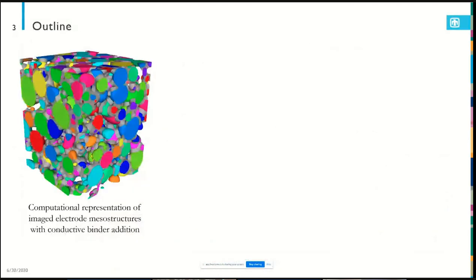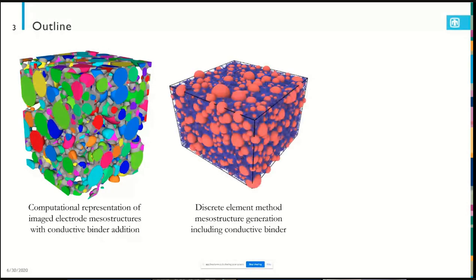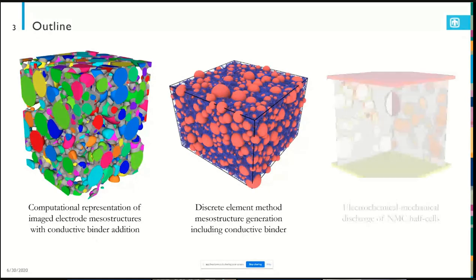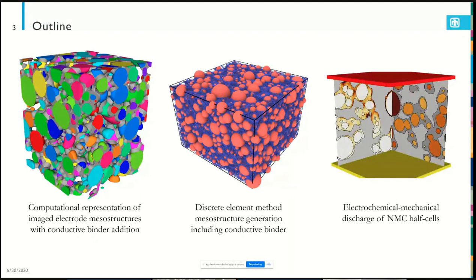My talk today is divided into three sections. First, I'll talk about how we computationally represent the mesostructure of an NMC cathode in a finite element code — image-based simulation and CBD phase reconstruction. Then we'll discuss discrete element method simulations to generate mesostructures that more physically include the conductive binder domain. Finally, we'll cover some electrochemical simulations. I'd like to pause after each section for questions.